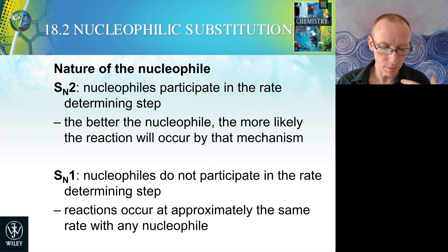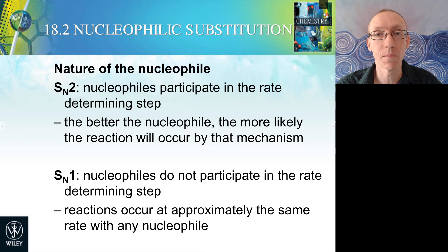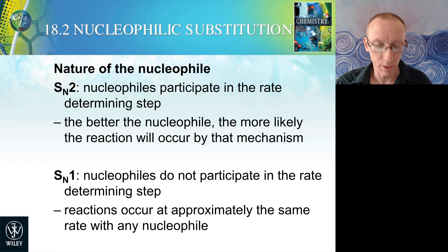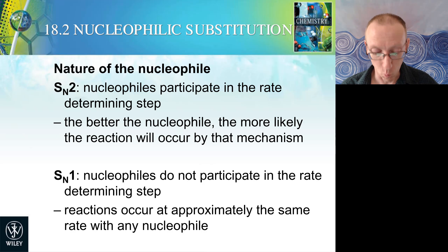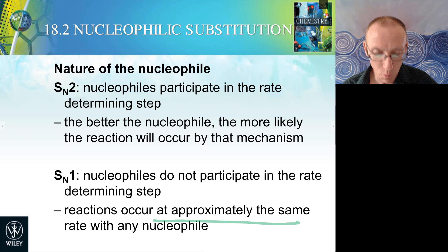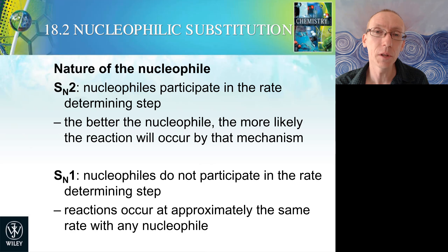The nature of the nucleophile also impacts which mechanism the nucleophilic substitution occurs by. In SN2 reactions, the nucleophile participates in the rate-determining step, so the better the nucleophile, the more likely the reaction will occur via an SN2 mechanism. In SN1 reaction mechanisms, the nucleophile is not present in the rate-determining step, so reactions occur at approximately the same rate with any nucleophile — even poor nucleophiles can react via SN1 with not much difference between poor and good nucleophiles.